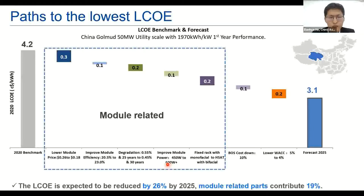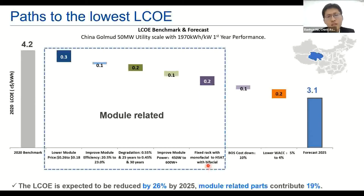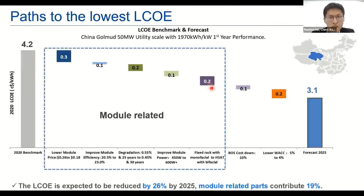For big size modules, if we increase module power from 450 watts to 600 watts, it can contribute about 0.1 cents. And for system design, if we use fixed rack with monofacial translated to horizontal single-axis tracker with bifacial, the LCOE will be reduced about 0.2 cents. Those are the main module-related factors we'll discuss today.